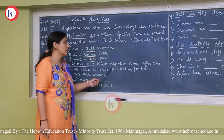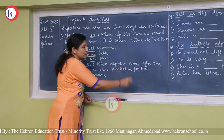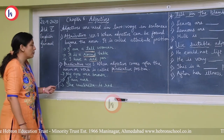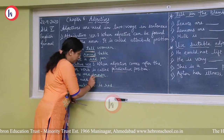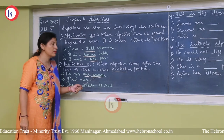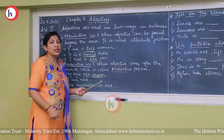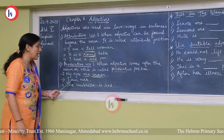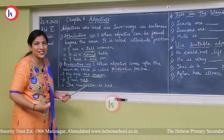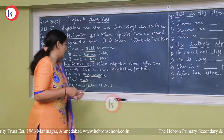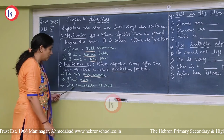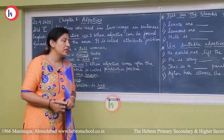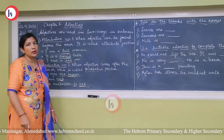Predicative use — when the adjective comes after the noun or verb, it is called predicative position. For example, 'My eyes are brown' — 'are' is the verb and 'brown' comes after the verb, so it becomes a predicative case. 'I am nice' — 'am' is the verb and 'nice' comes after it; that is predicative. 'The umbrella is red' — 'red' comes after the verb 'is,' so that becomes a predicative case.